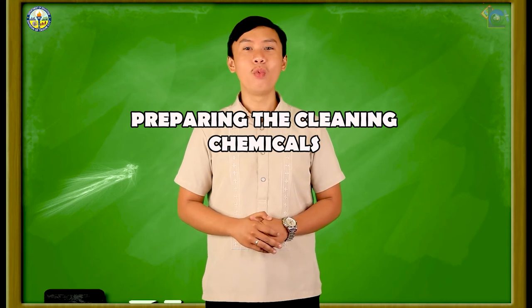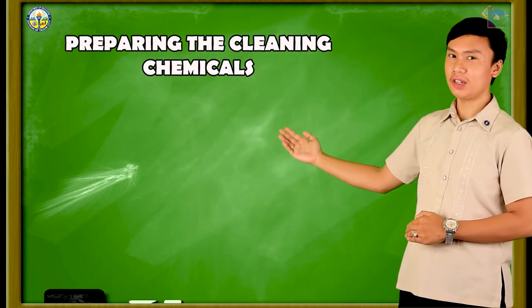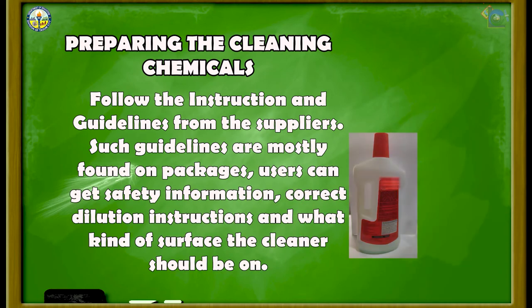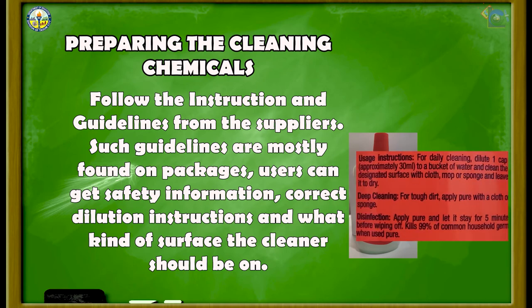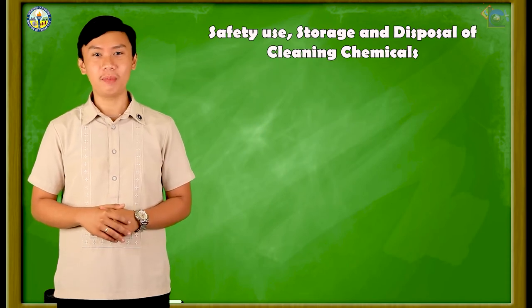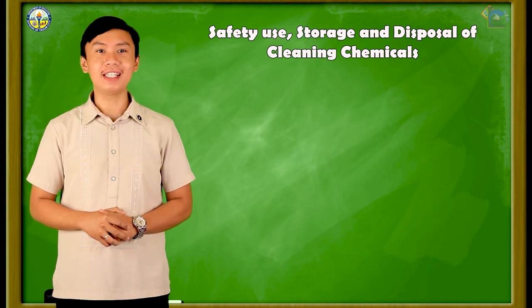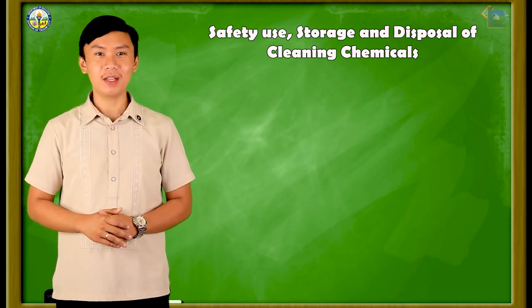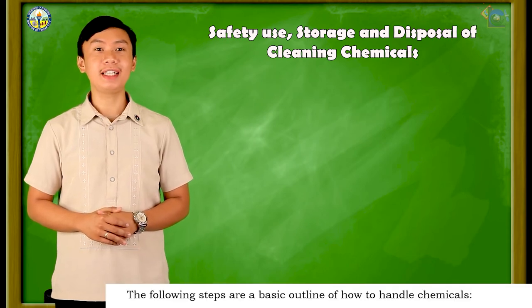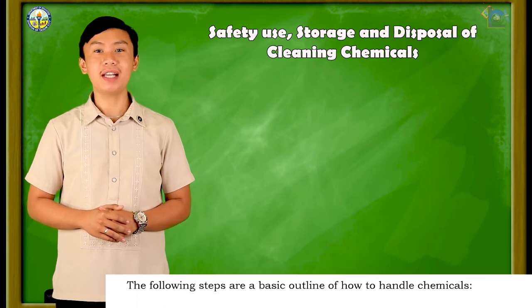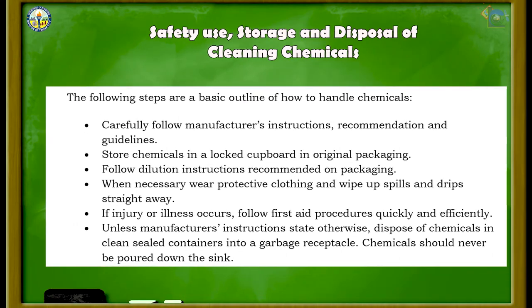In preparing cleaning chemicals, one needs to carefully follow instructions and guidelines from suppliers. Such guidelines are mostly found on packages, where users can get safety information, correct dilution instructions, and what kind of surface the cleaner should be used on. Wherever you might be in future fields, be reminded of the safe use, storage, and disposal of cleaning chemicals. The Occupational Health and Safety Act and Environmental Standards must be observed specifically when using and processing cleaning chemicals, as these chemicals are potentially hazardous to humans. The following steps are the basic outline of how to handle chemicals.